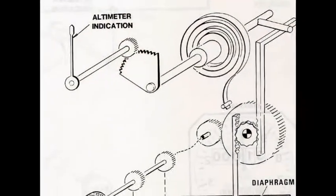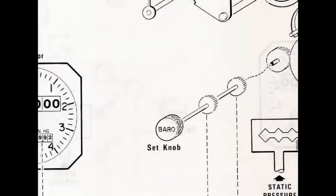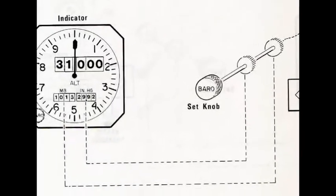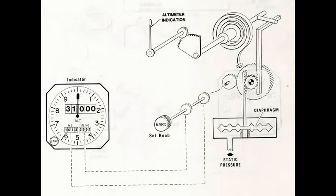The barrow set knob is used by the shop to adjust the display's zero set point at sea level. As the airplane climbs, the static pressure decreases. This will cause the bellows to exert an upward force on the indicator.